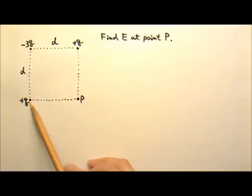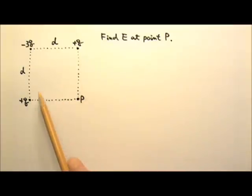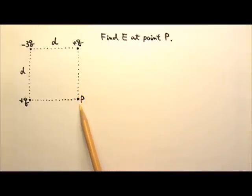Three point charges, positive Q, negative 3Q and positive Q are at three corners of a square of side D. Determine the magnitude and direction of the net electric field at point P, the fourth corner.